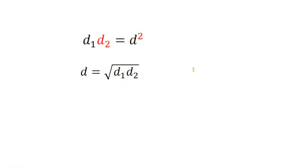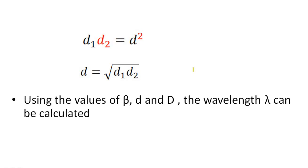So we got small d. We already found beta. We got small d. Capital D we can measure directly. So substitute all these values. Using the values of beta, D and capital D, the wavelength lambda can be calculated.